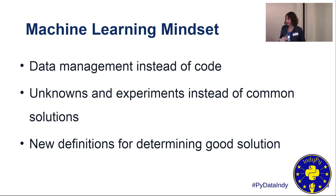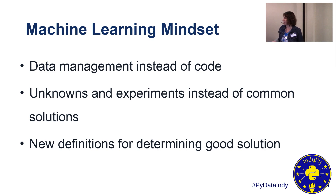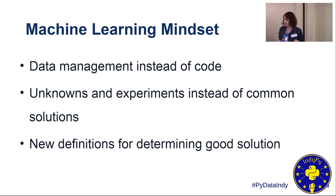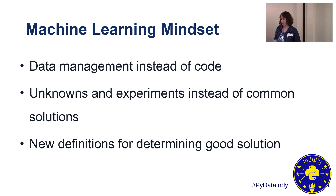Some things to keep in mind: there's much more managing of data — organizing it, double-checking that it's correct. Finding the data in the first place can be a challenge; you might realize you don't have enough data to do a machine learning problem, and now instead of writing code, you're looking for sources of data. There are a lot of unknowns — you're running experiments to see what works, spending a lot of time experimenting and seeing, 'will this work, won't it work?' rather than saying, 'I'm going to write that this week.'